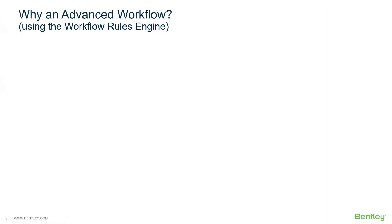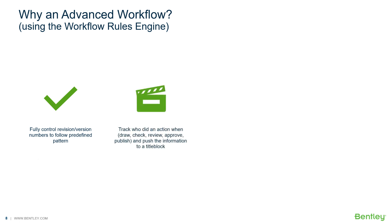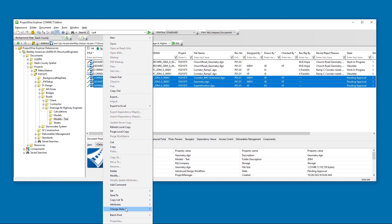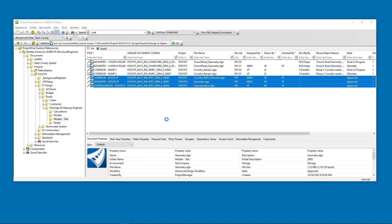So why have an advanced ProjectWise workflow? In addition to having the right information for the right people at the right time, advanced workflows offer other abilities. Revision and version numbers can be fully controlled to follow predefined patterns. An advanced workflow also gives the ability to track when an action occurred and who did the action, such as draw, check, review, approve, or publish, and push the information to the title block inside the file.